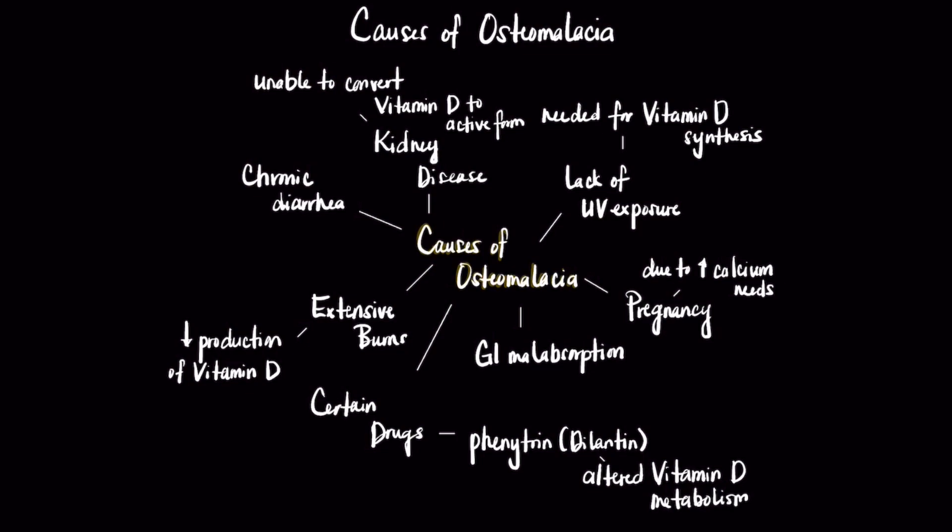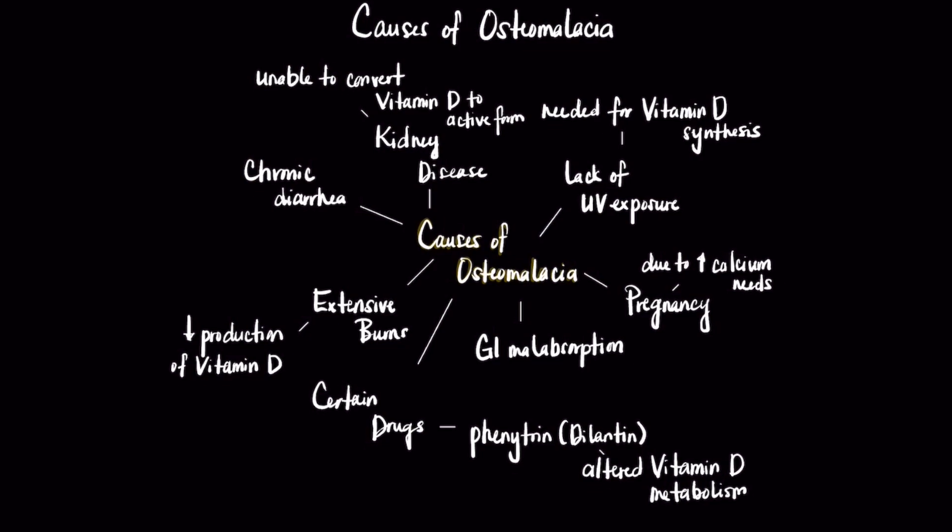GI malabsorption and chronic diarrhea go hand in hand, as any problems with the GI system can cause malabsorption of calcium, which can then lead to osteomalacia. Pregnancy can cause osteomalacia due to the increased need for calcium as the fetus develops, which can put mothers at high risk for osteomalacia.